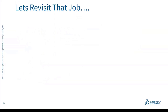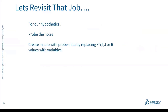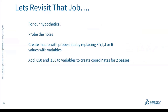Let's revisit the hypothetical job. For those oddball-sized holes, we're going to probe the holes first, then create a macro using the probing data, replacing X, Y, I, J, or R values with variables. We'll add 50 thou and 100 thou to variables to create coordinates for two passes. Then we rinse and repeat — because this is a job in the thousands.